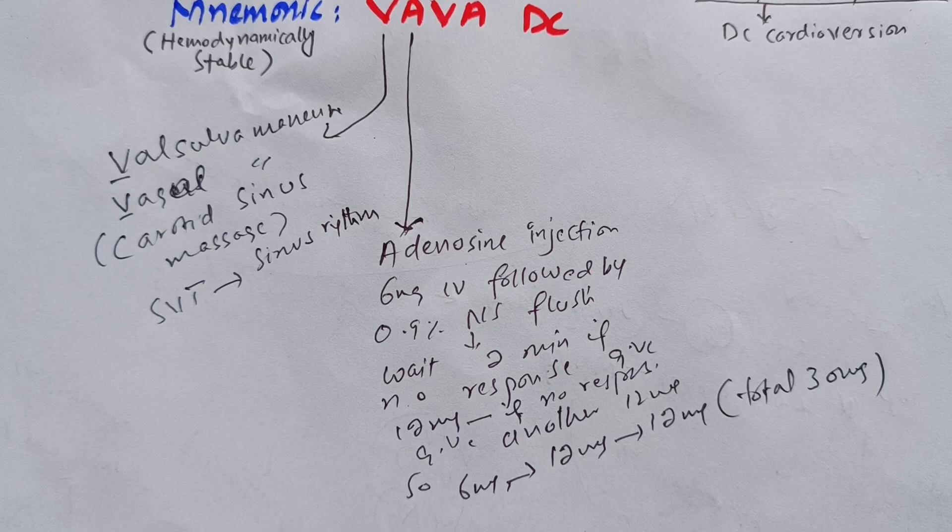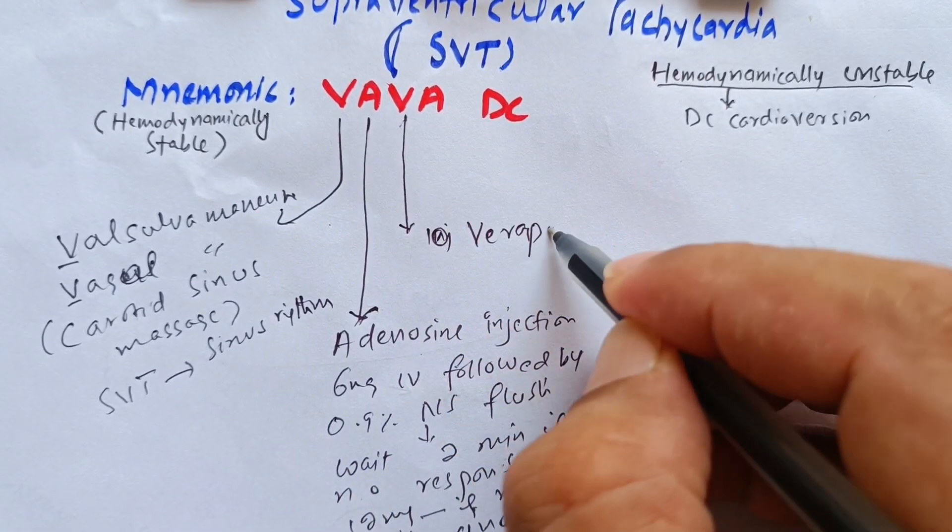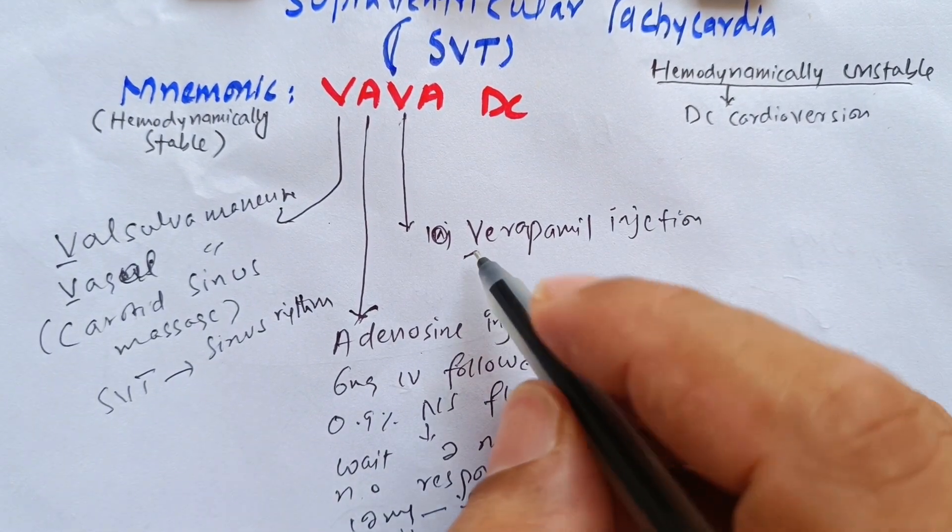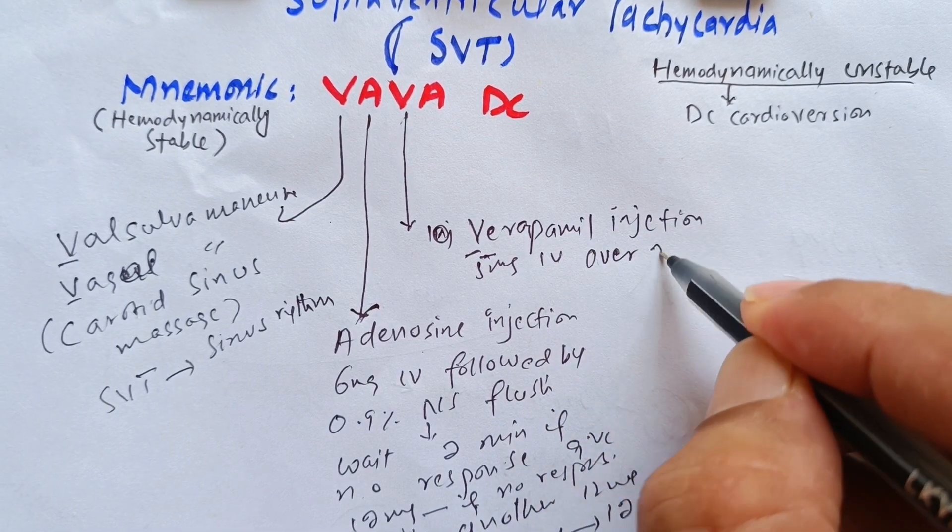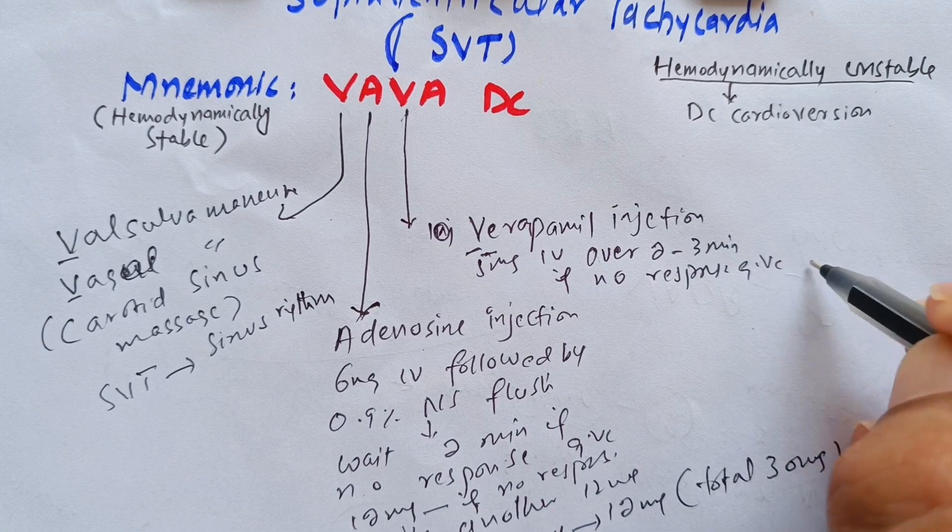If there is no response with adenosine, then we will give verapamil. V stands for verapamil injection. Verapamil is 10 mg. This is 5 mg IV over 2 to 3 minutes. If there is no response, we will give another 5 mg.